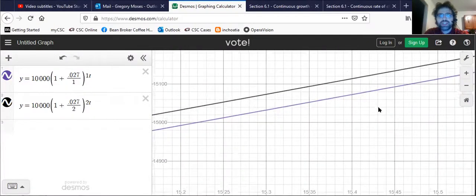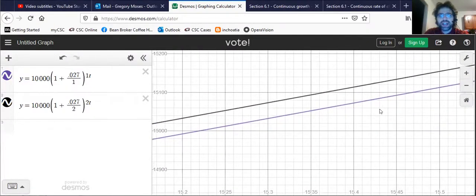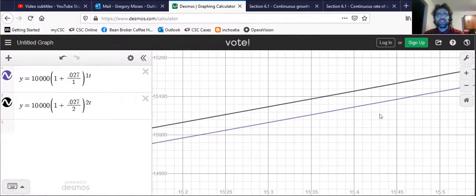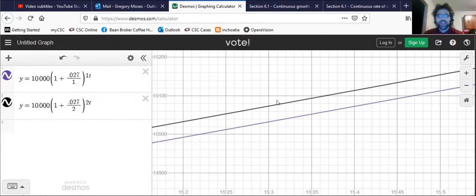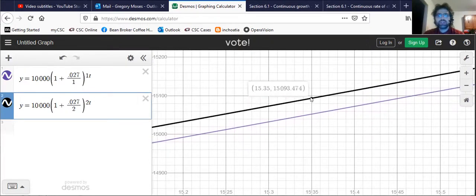Okay, but once we zoom in a little, we see these are different graphs. And this is the graph where you compound twice.